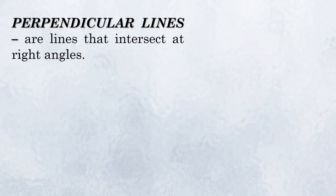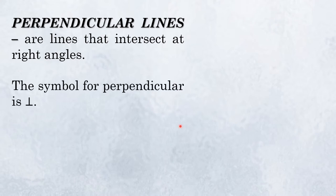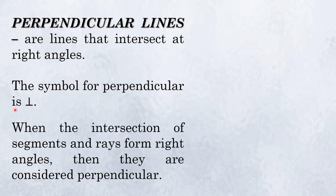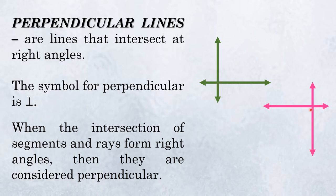Next are perpendicular lines. These are lines that intersect at right angles. The symbol for perpendicular is this one. When the intersection of segments and rays form right angles, they are considered perpendicular. Perpendicular lines can look like an L-shape, a plus sign, or an X, but they always form right angles at the intersection.